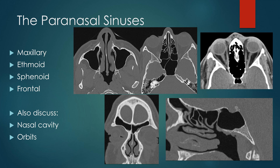The paranasal sinuses consist of the paired maxillary sinuses, the ethmoid air cells — which you have anterior and posterior ones, you just kind of divide it in half — the sphenoid sinus, which is posterior to the ethmoid air cells, and the frontal sinus, which is the most superior sinus. In discussion of the paranasal sinuses, you also discuss findings in the nasal cavity as well as the orbits due to their proximity to the sinus structures.